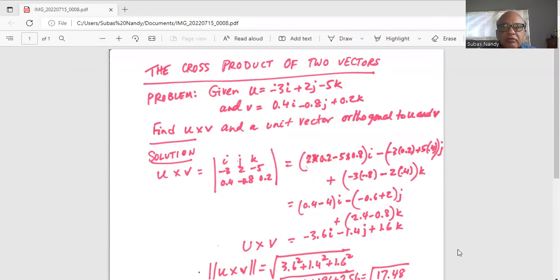Problem is given two vectors u equal to minus 3i plus 2j minus 5k and v equal to 0.4i minus 0.8j plus 0.2k. Find u cross v and a unit vector orthogonal to u and v.